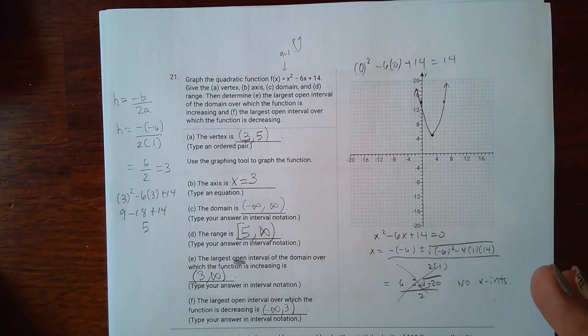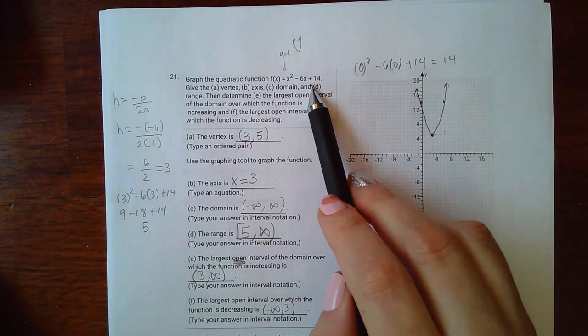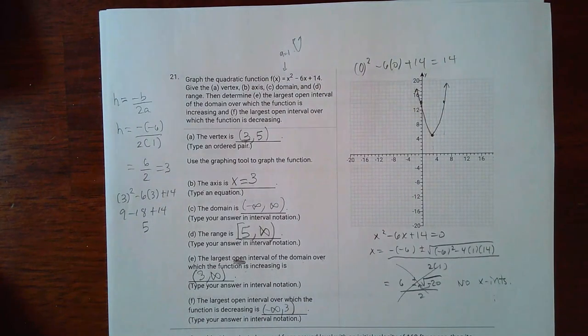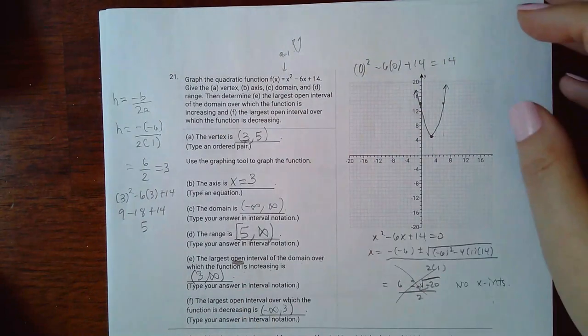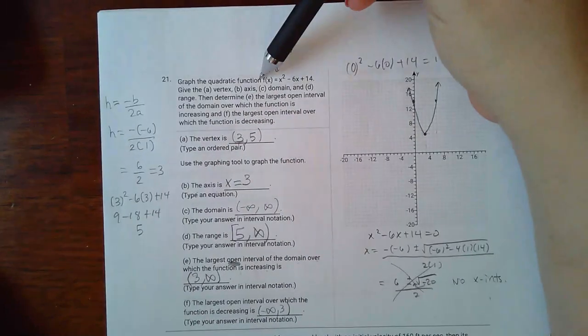Number 21 says to graph the quadratic function and they give the function to me here. They say give the vertex, the axis, the domain, and the range, and then determine the largest intervals over which it's increasing and the largest open intervals over which the function is decreasing. So the first thing I need to do in order to graph it is to figure out what the vertex is.